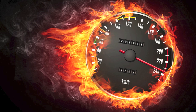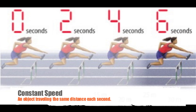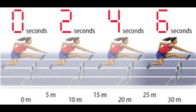Constant speed is an object that's moving at the same distance each second. If you look at the hurdler in this picture, you can see that after 2 seconds she's gone 10 meters, after 4 seconds she's gone 20 meters, and after 6 seconds she's gone 30 meters. Between 0 and 2 seconds she's gone 5 meters, and every second she's going another 5 meters. So this hurdler is traveling at a constant speed of 5 meters per second.